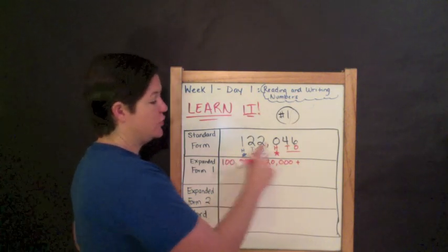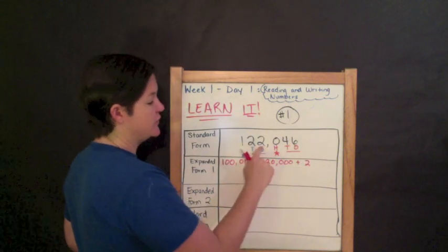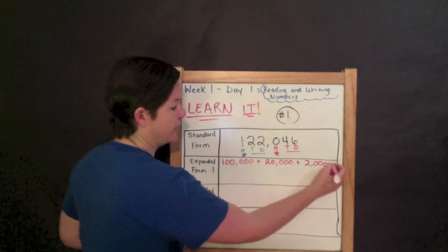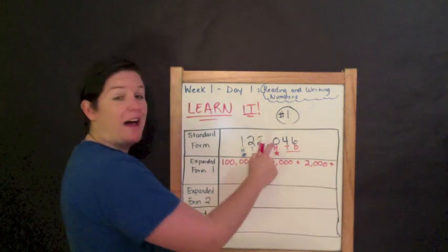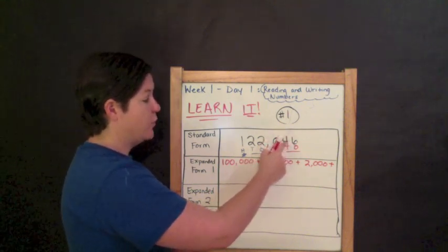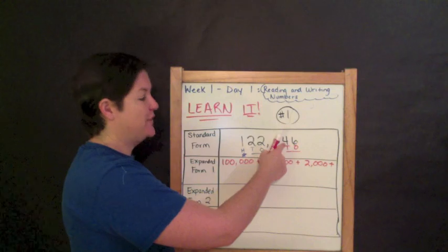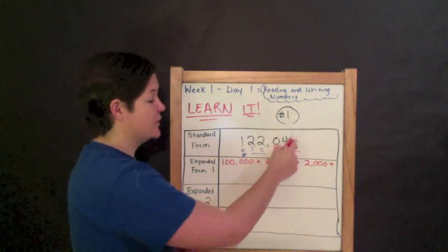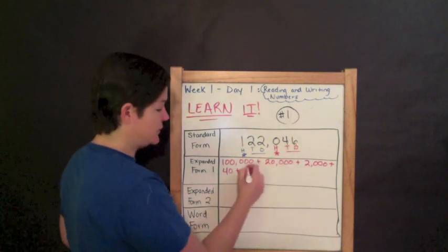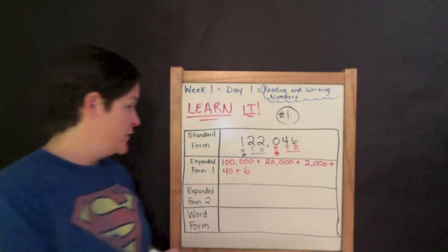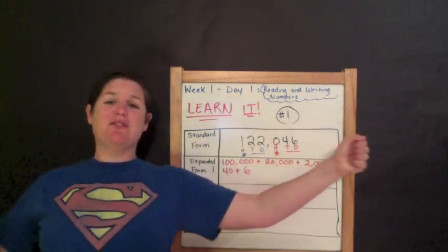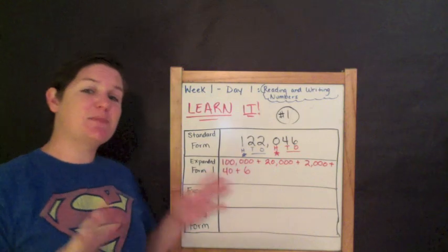So do you see how we're taking the original number and stretching it out — expanding it? One hundred thousand plus twenty thousand. Now we're on to the next digit: two. The value of this two is two thousand. Plus. I've got a zero in the hundreds place, so I can just skip that. The value of the four is forty. Plus forty. And then the value of the six is just six. So one hundred thousand plus twenty thousand plus two thousand plus forty plus six is expanded form number one.